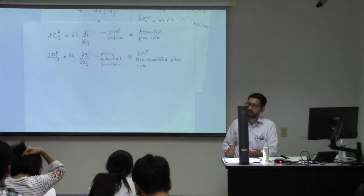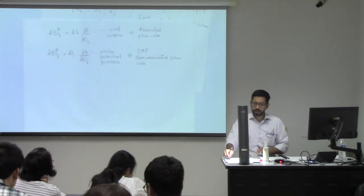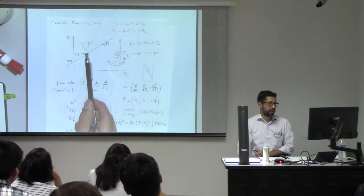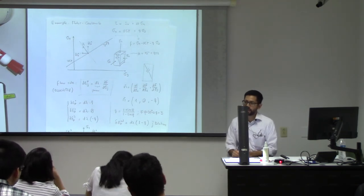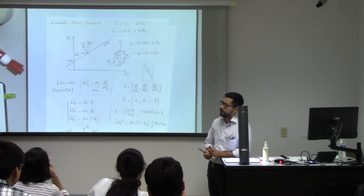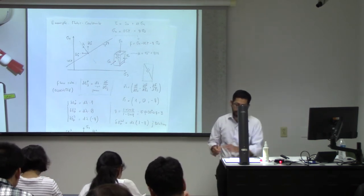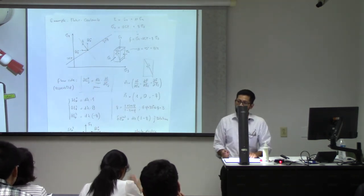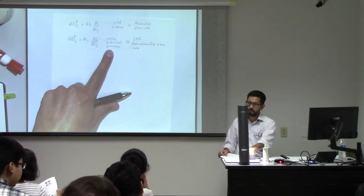So do these equations have a physical basis or are they from a fit? Well, F has a physical meaning: if you have an associated flow rule, those are the plastic strains after shear failure and they depend on the direction of the stresses. Having something normal to the yield surface makes sense for calculating plastic strains. But sometimes it doesn't make that much sense, and that's why you have to propose a new plastic potential function.